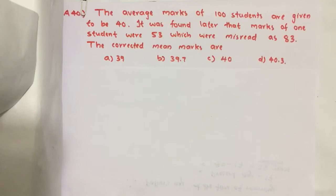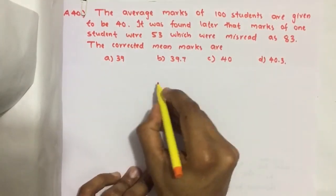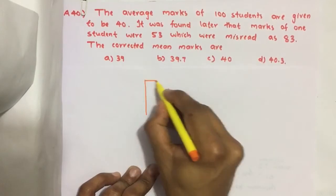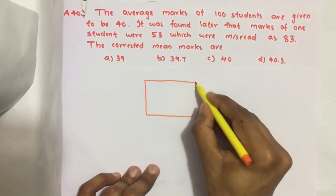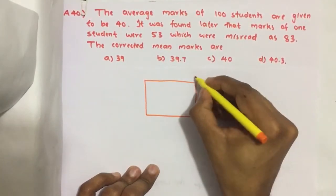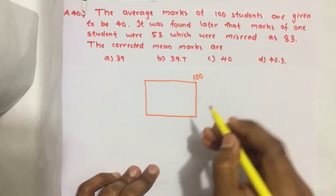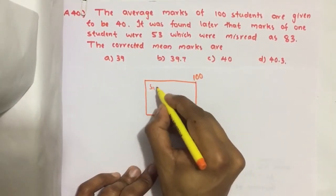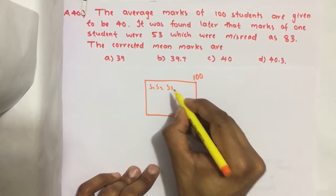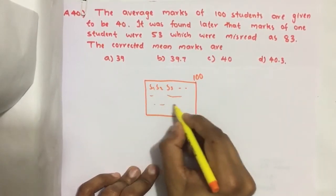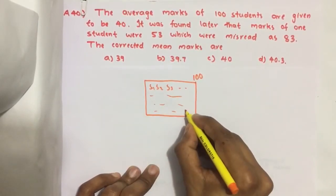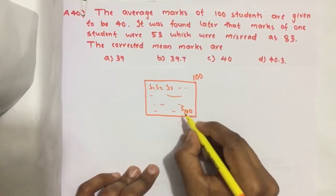So for that, suppose we have a classroom here. How many students are there? 100 students - each student S1, S2, S3, like that we have S100.